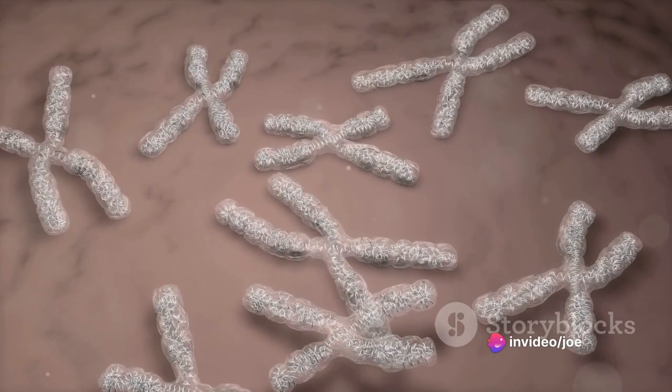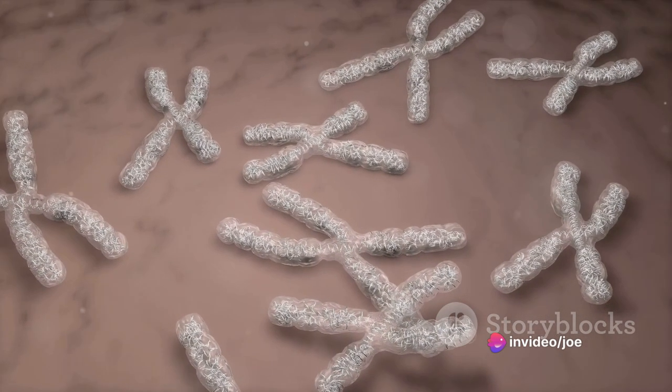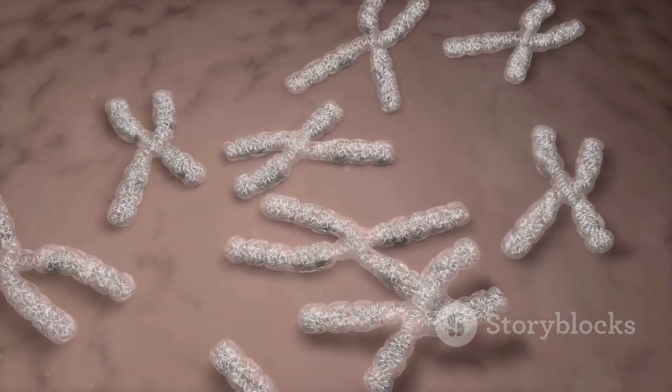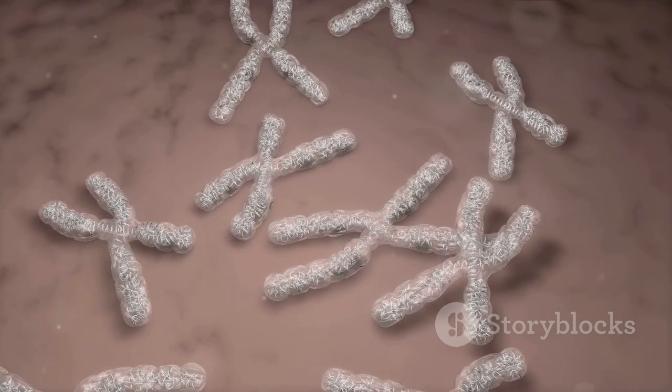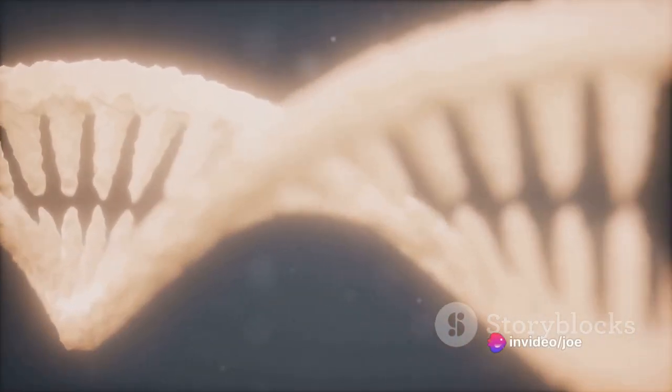Now, women have two X chromosomes, while men have one X and one Y. If a woman inherits a defective gene causing colorblindness on one X chromosome, her other X chromosome can compensate for it. Essentially, she has a backup.